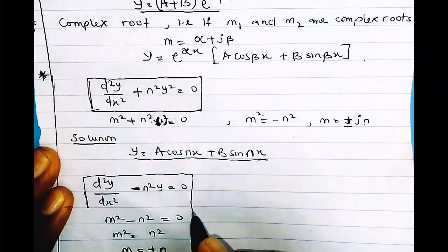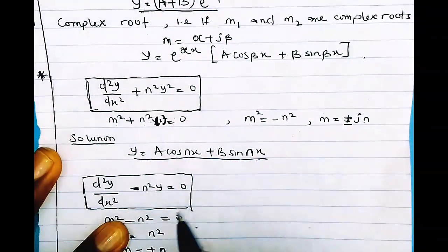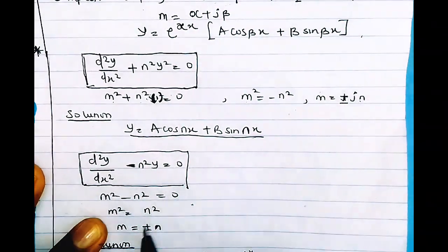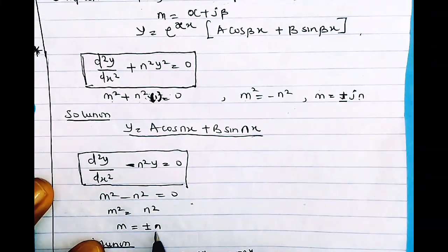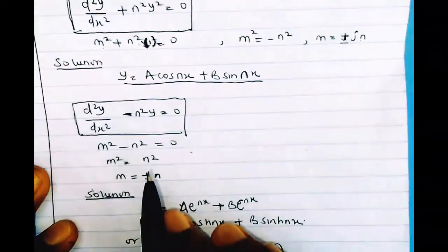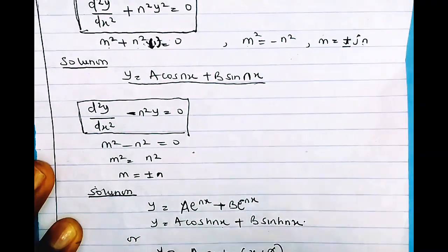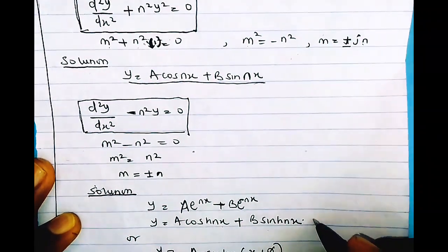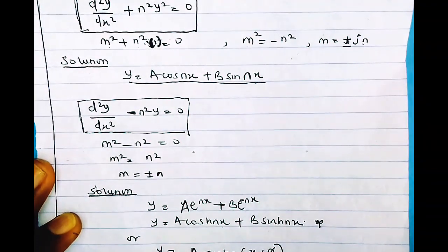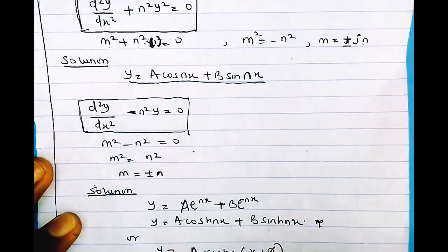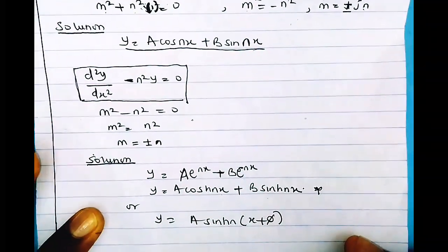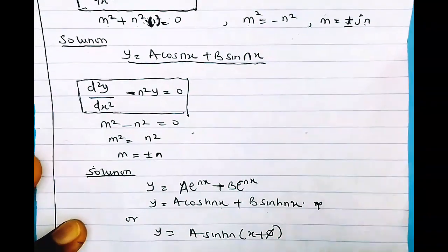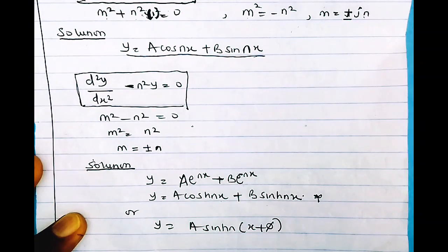We also have a special case d²y/dx² − n²y = 0. The auxiliary equation m² − n² = 0 gives m = ±n. The solution can be written as A·e^(nx) + B·e^(−nx), or equivalently in terms of hyperbolic functions as A·cosh(nx) + B·sinh(nx), or as A·sinh(nx + φ).